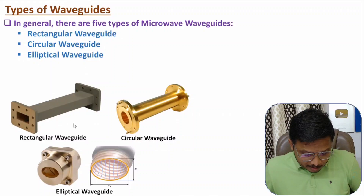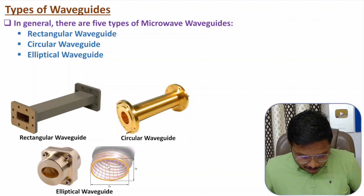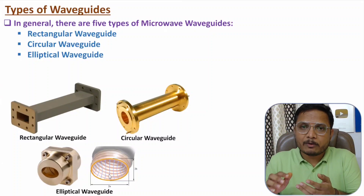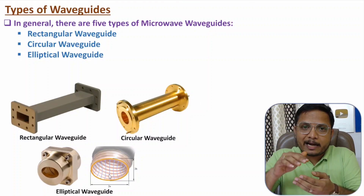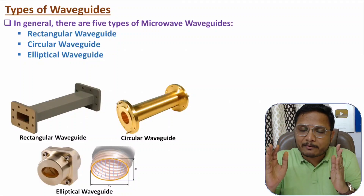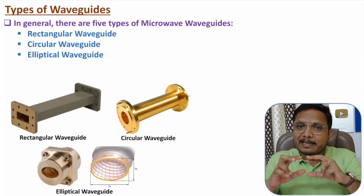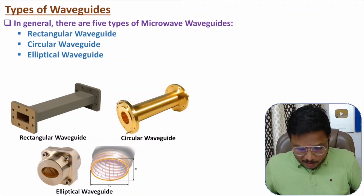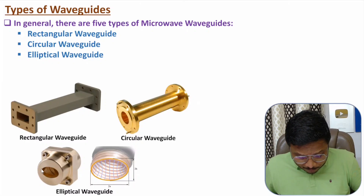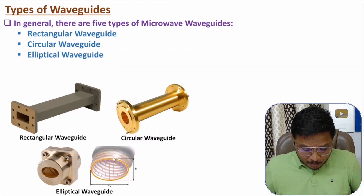The third type is the elliptical waveguide. In an elliptical waveguide, one dimension is larger and the other is smaller. If you take a circular waveguide and press it, one side will have a larger dimension and the other a smaller dimension, forming an ellipse. You can observe the dimensions here — this is the connector of an elliptical waveguide and this is how the waveguide appears with its elliptical shape.